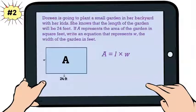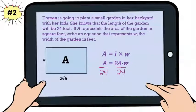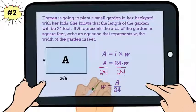We need to substitute 24 in place of the length and then divide both sides by 24 to solve for W. So our answer is W = A ÷ 24.